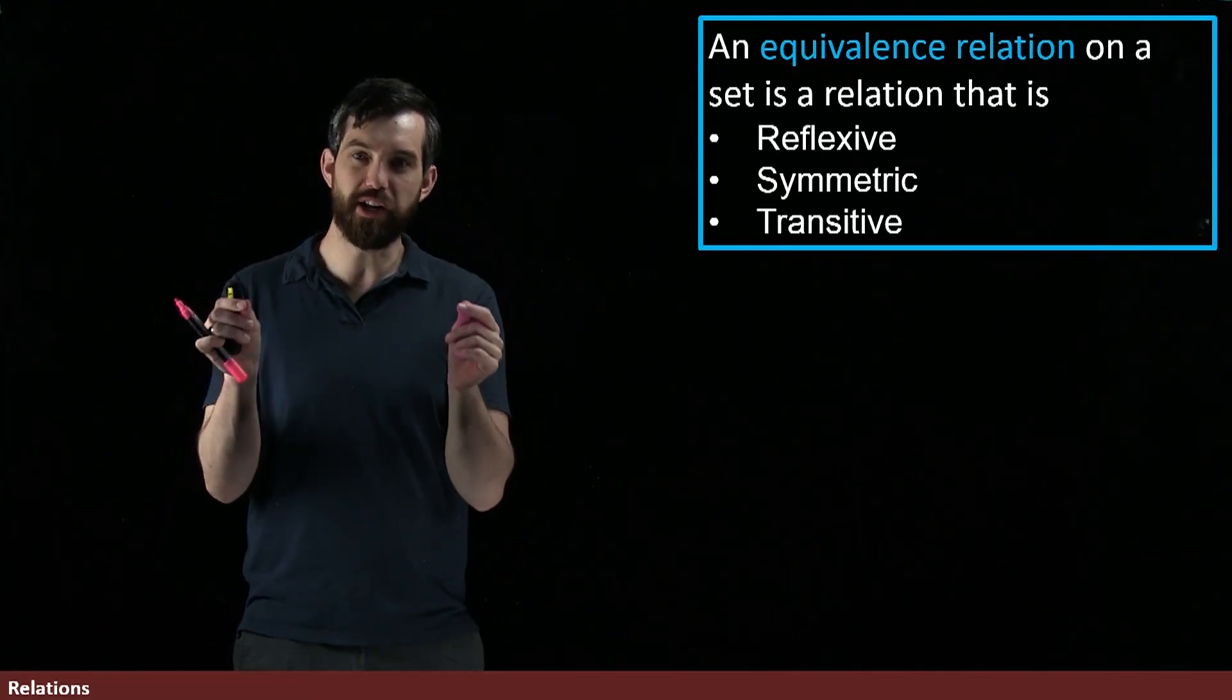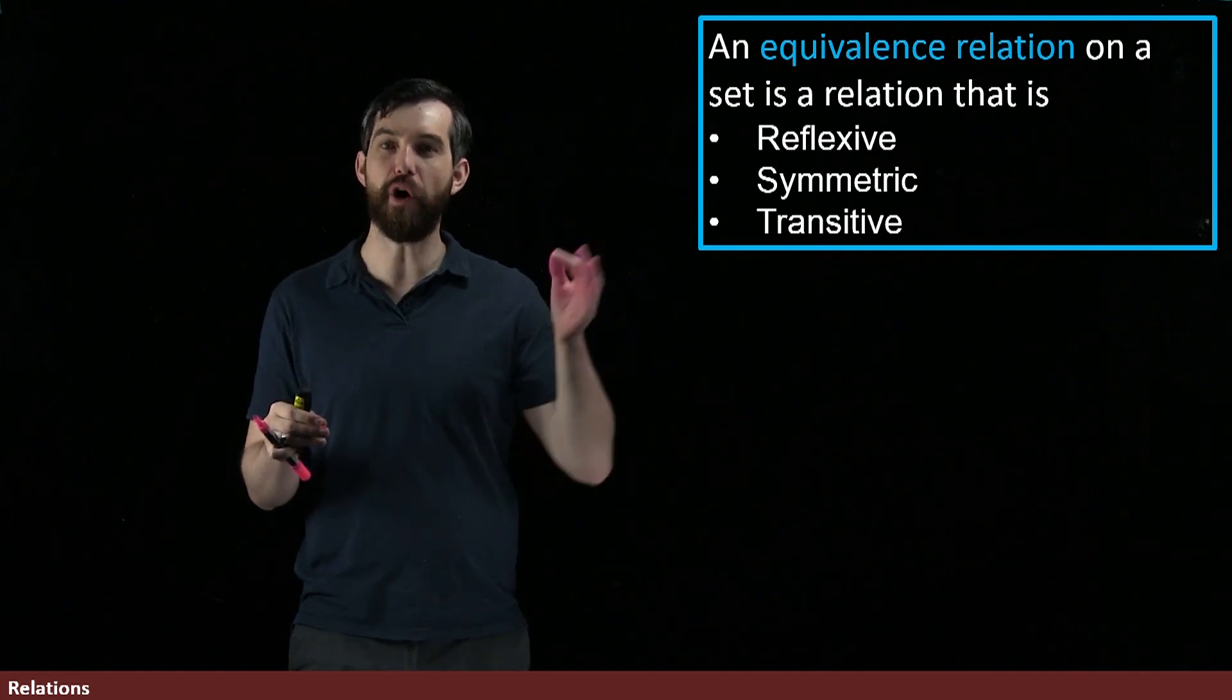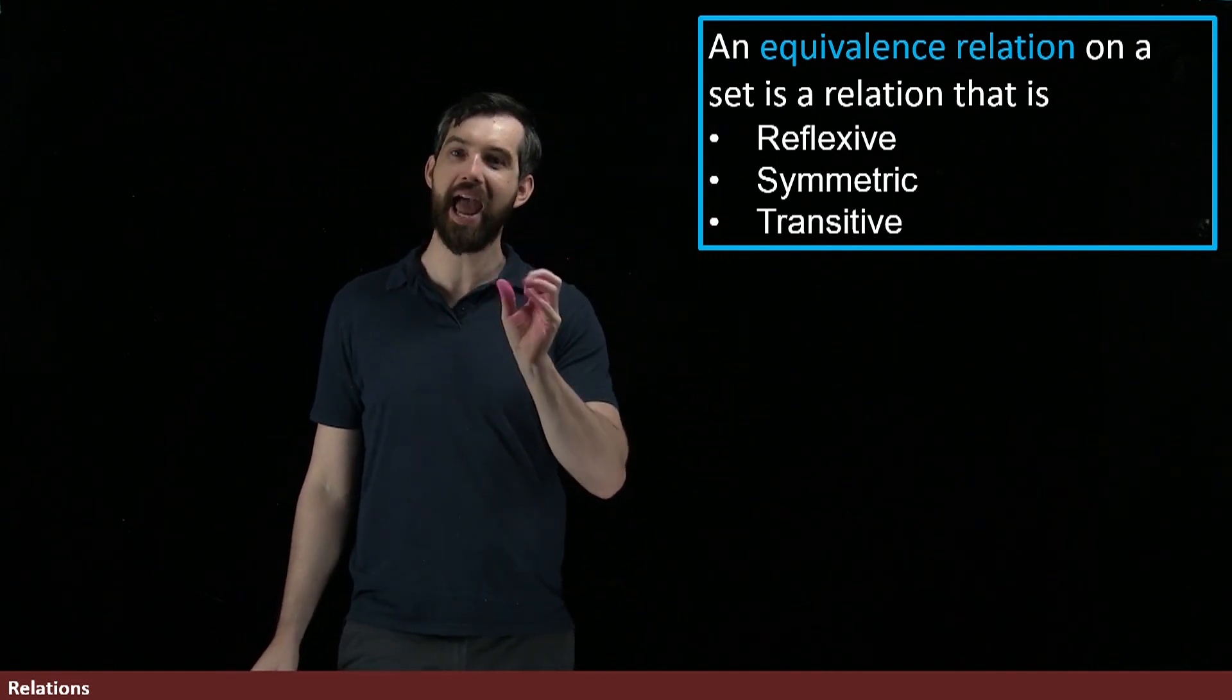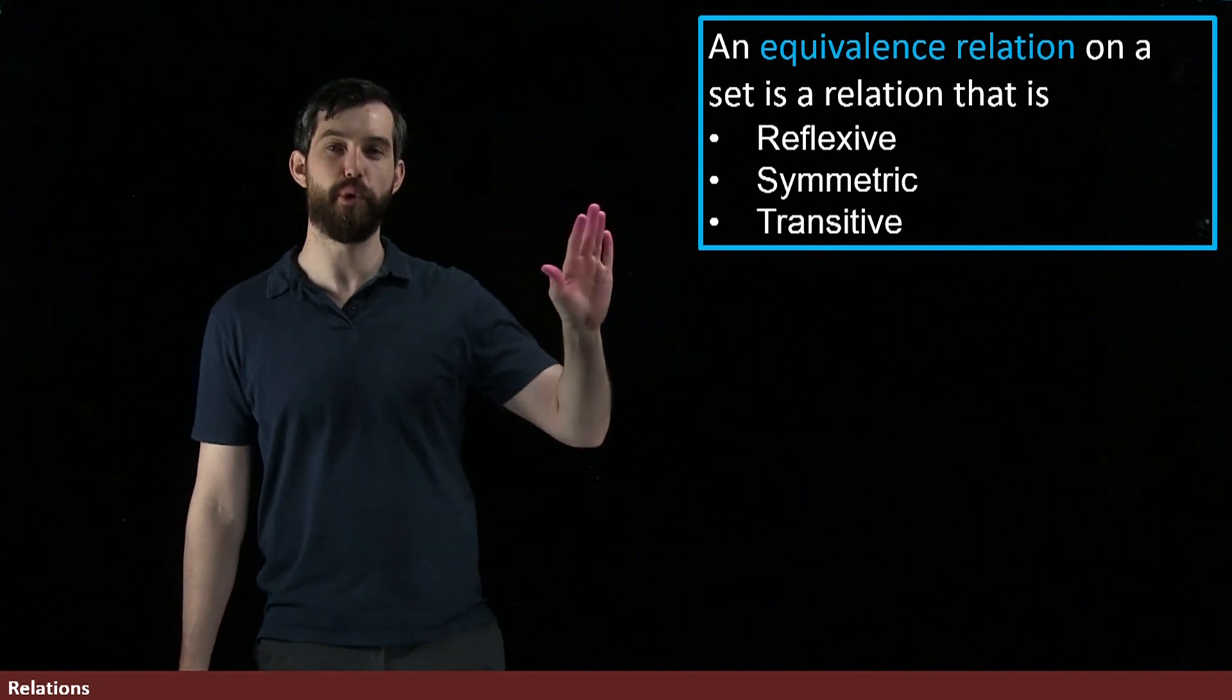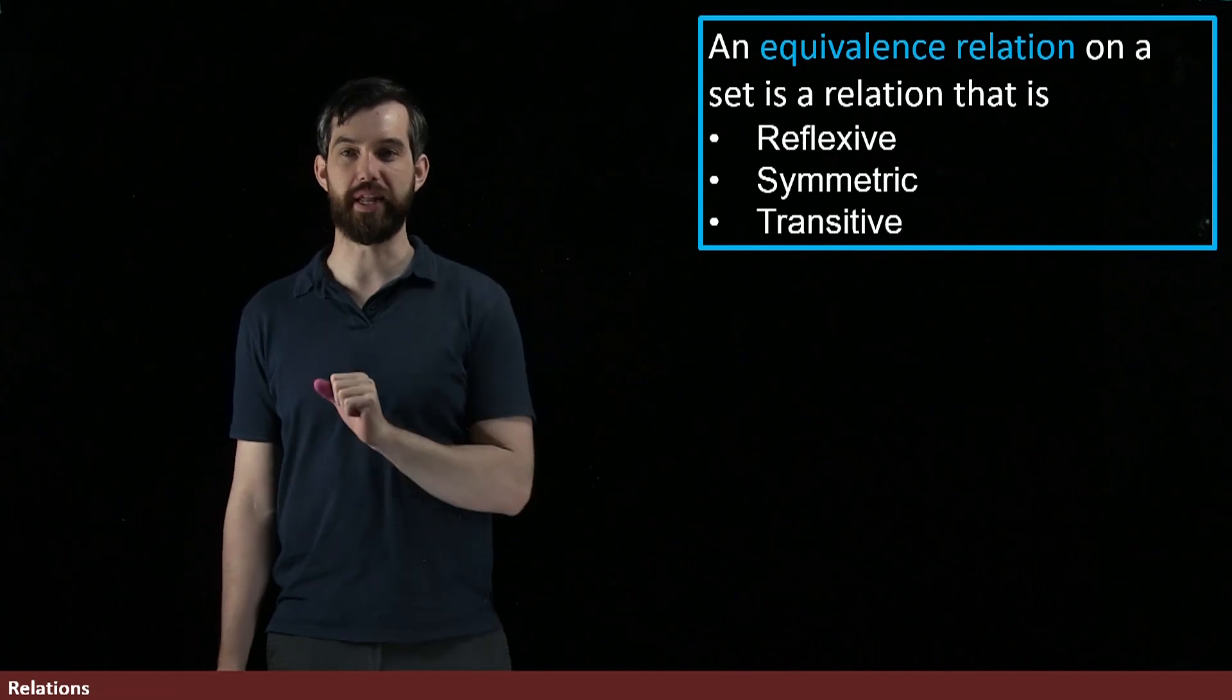We are going to particularly care about those relations on a set that have all three properties: that they are reflexive, they are symmetric, and they are transitive. This is going to be a very important consideration for us, and when we have all three properties, we're going to call it an equivalence relation.